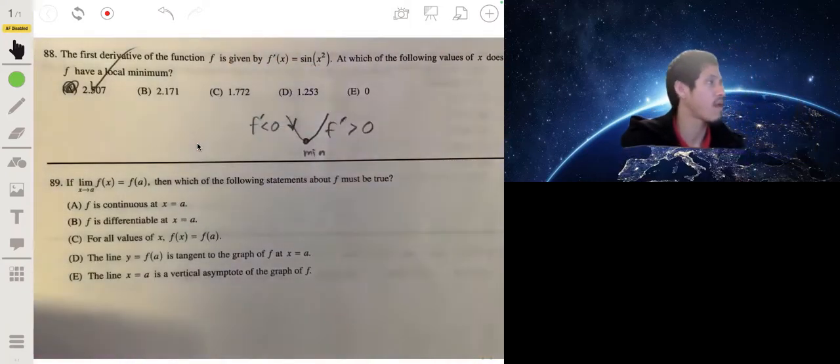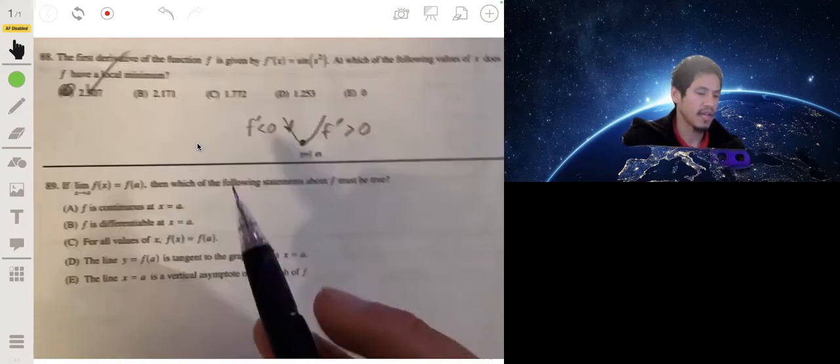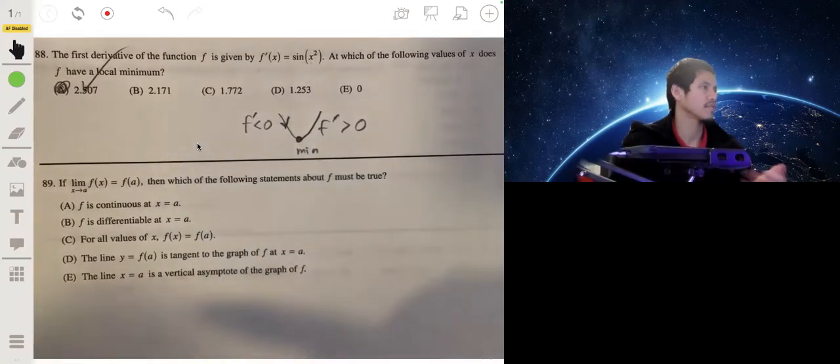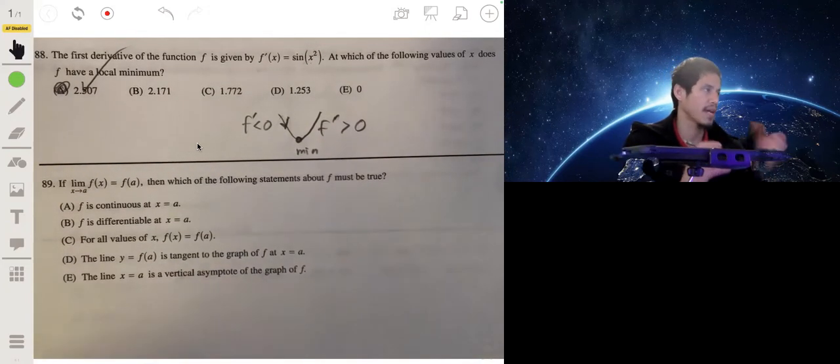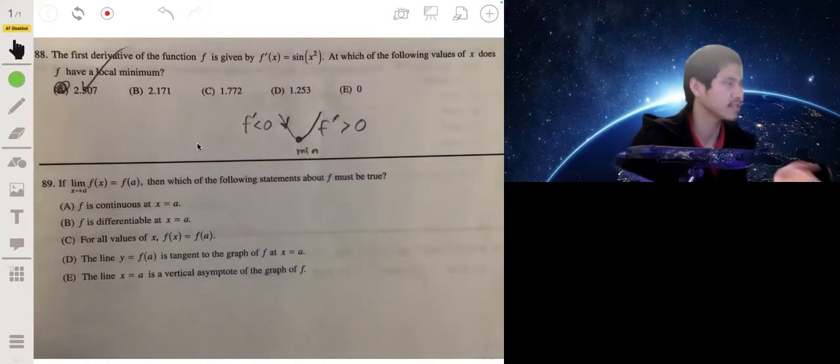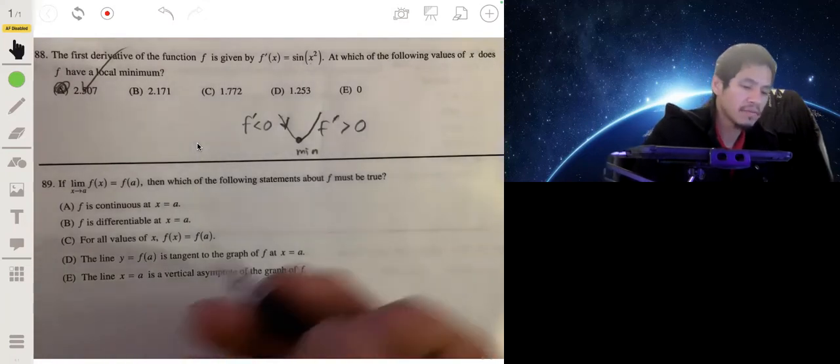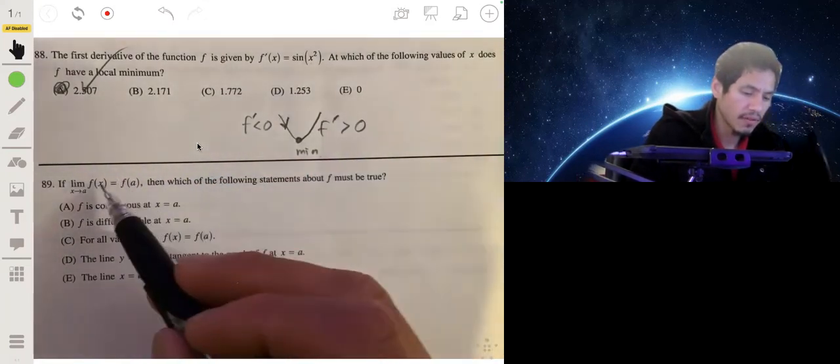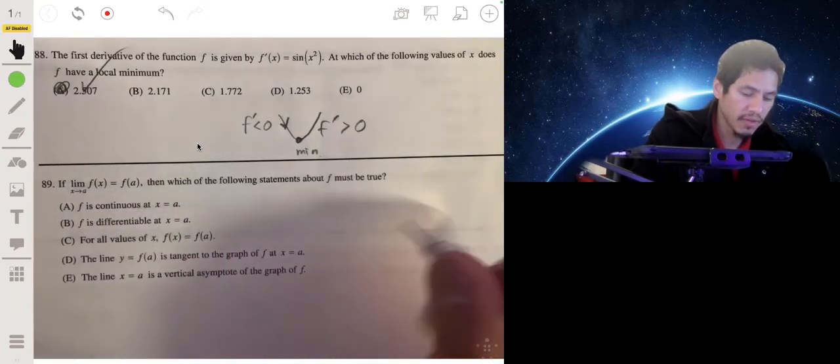Alright, if the limit as x approaches a of f of x is equal to f of a, which of these must be true? Okay, so this is again more like a theoretical one, not like a step-by-step. So you really gotta think, and again try drawing pictures when you deal with these sorts of problems. It really helps me.